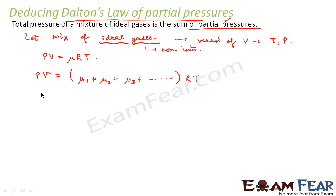So this we can write as, P is equal to μ1 plus μ2 plus μ3 plus dot dot dot RT divided by V. So this can again be written as μ1 RT by V plus μ2 RT by V plus so on.